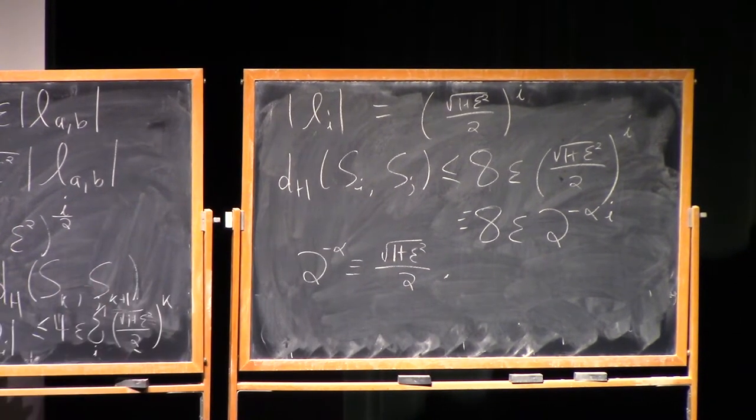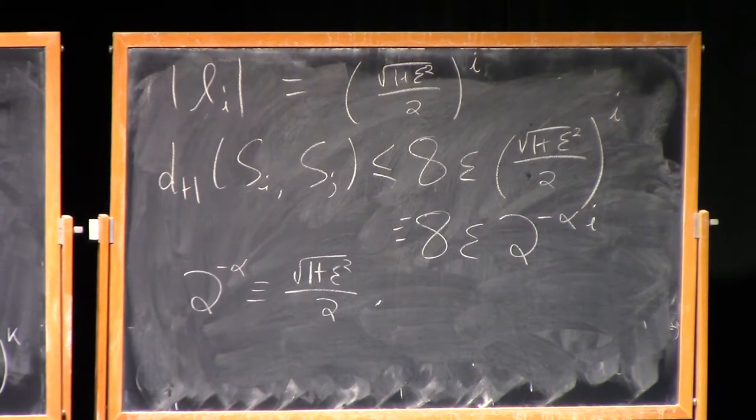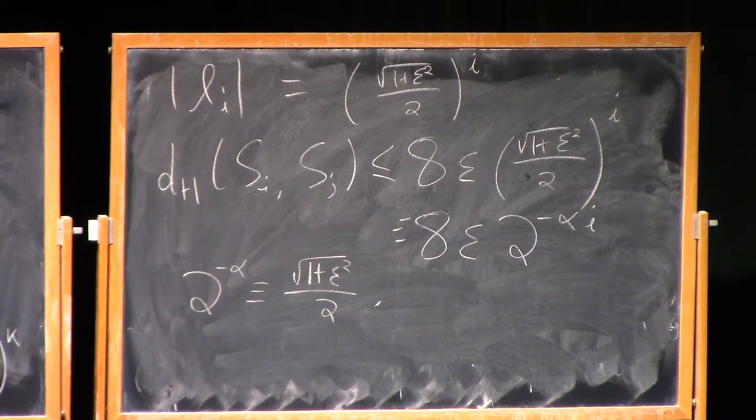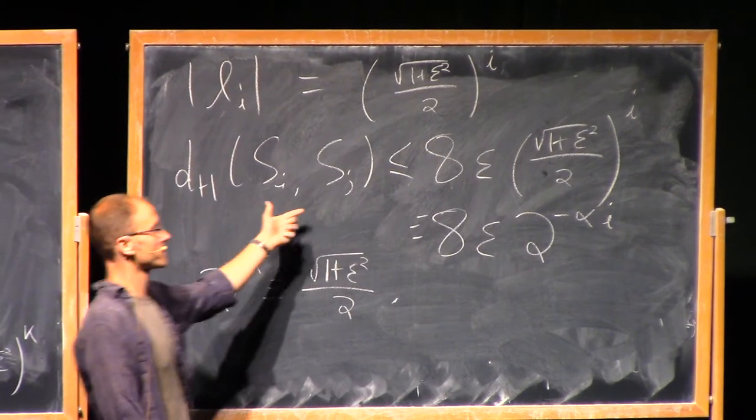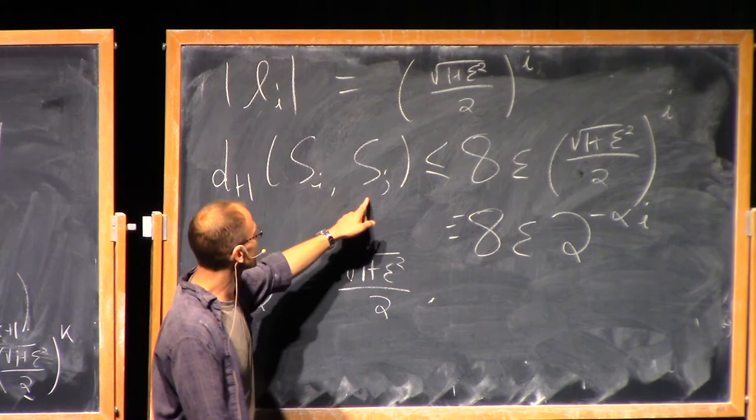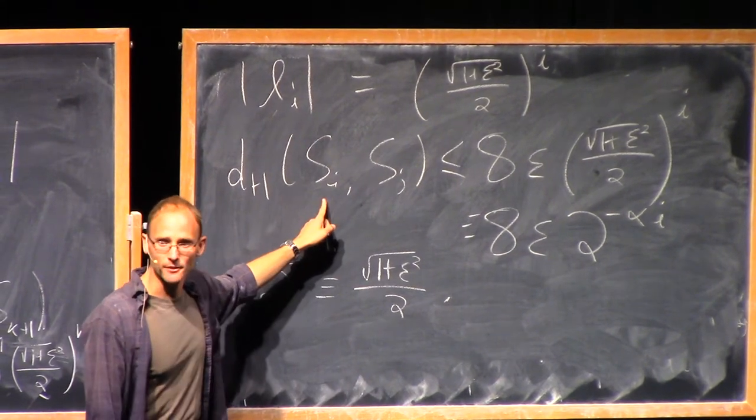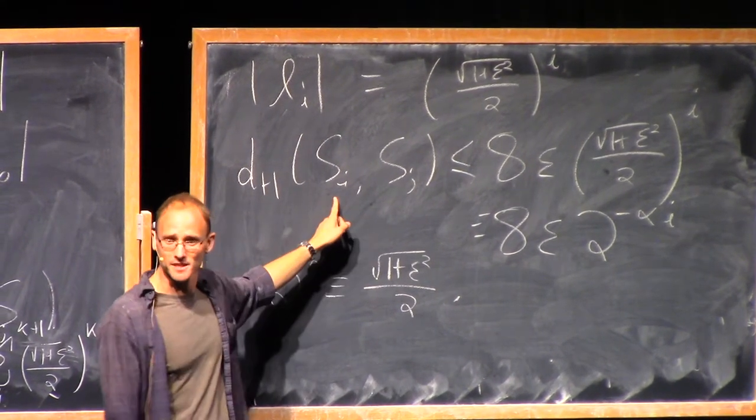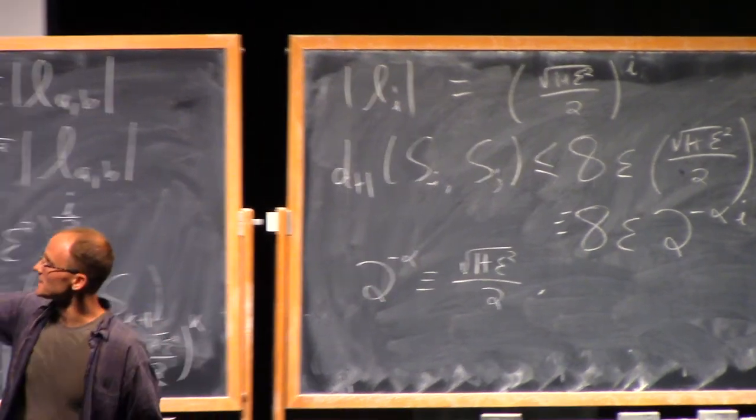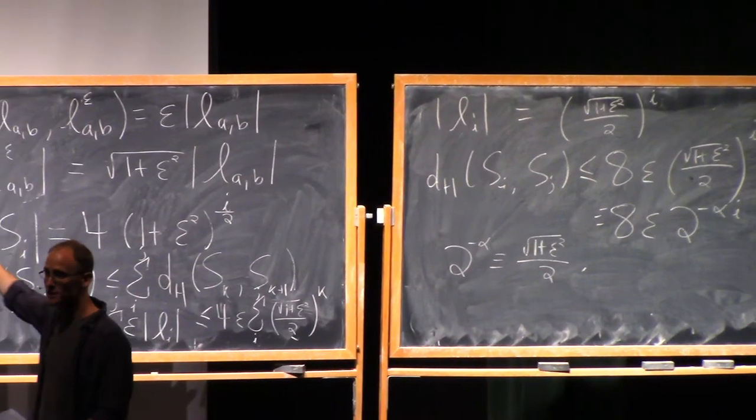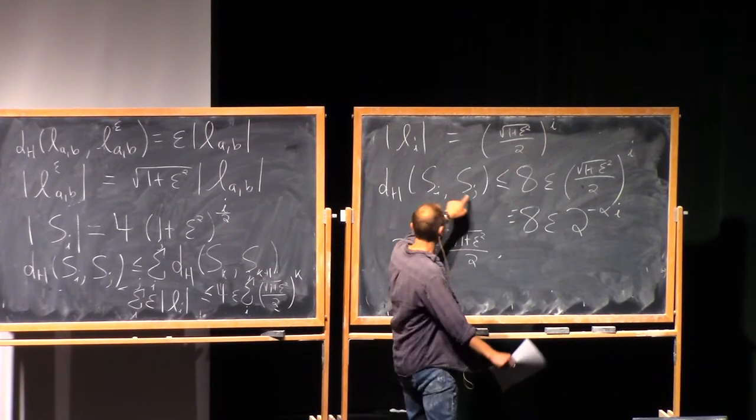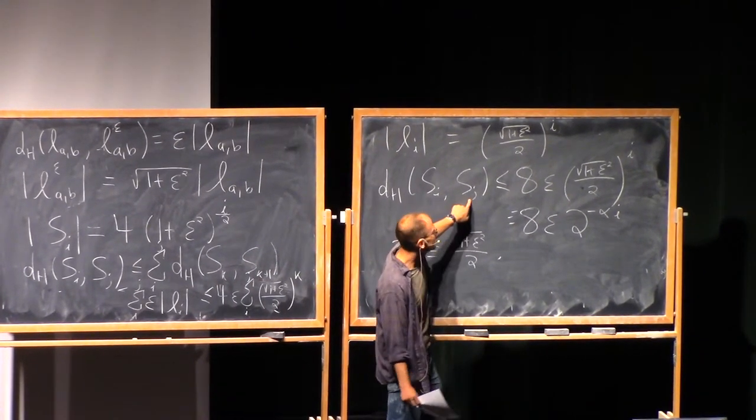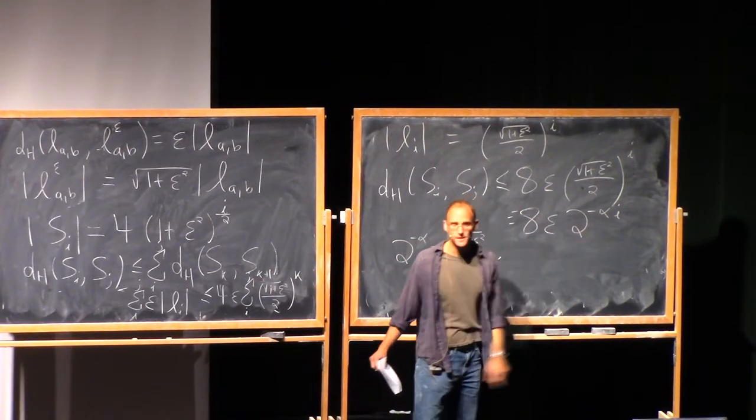So that means that the Hausdorff distance between S_i and S_j is less than or equal to, say, 8 times epsilon times what this is at i. Because each time it basically halves by some geometric series. So square root of 1 + epsilon^2 / 2^i. This is super small. I mean, 2 is much, much bigger than 1 + epsilon^2 if epsilon is small. And I'm actually going to define this to be 8 epsilon times 2^{-alpha i}. So 2^{-alpha} is by definition this quantity. Just so I can write it nice and cleanly.